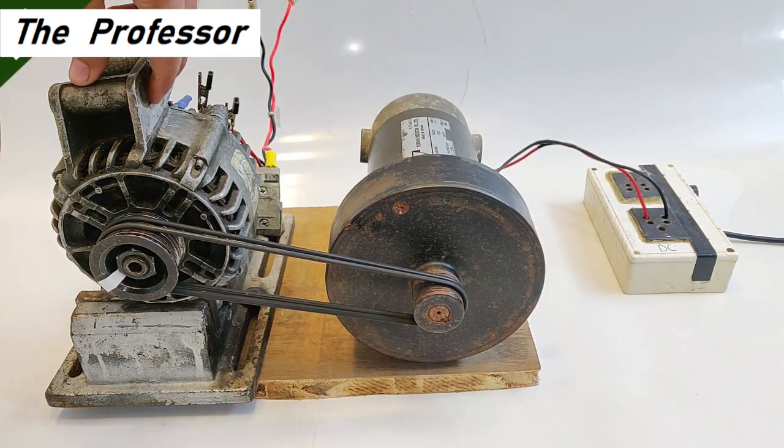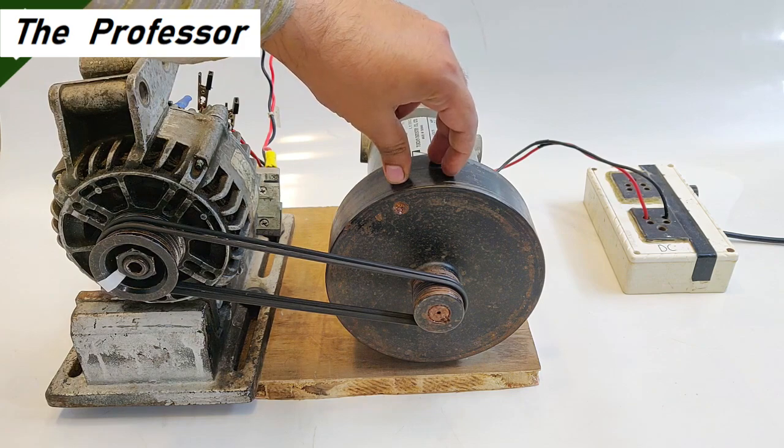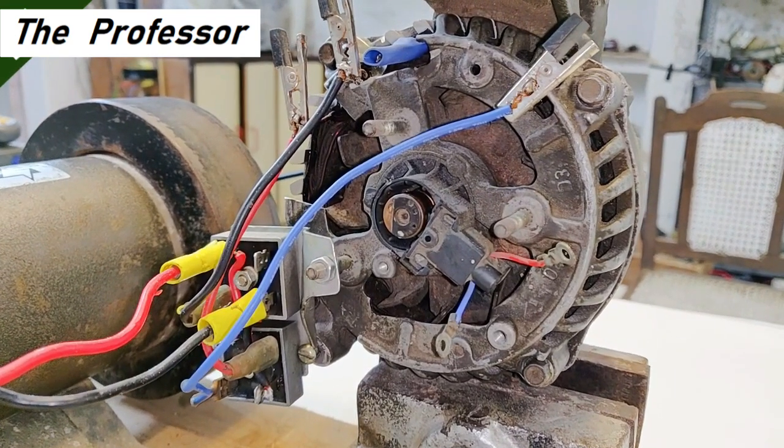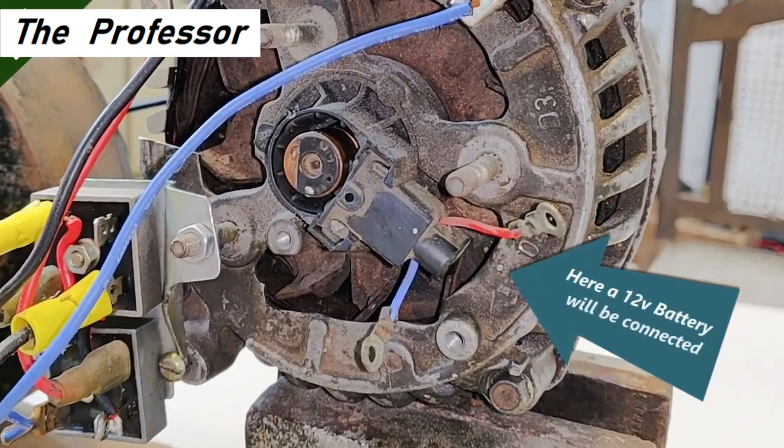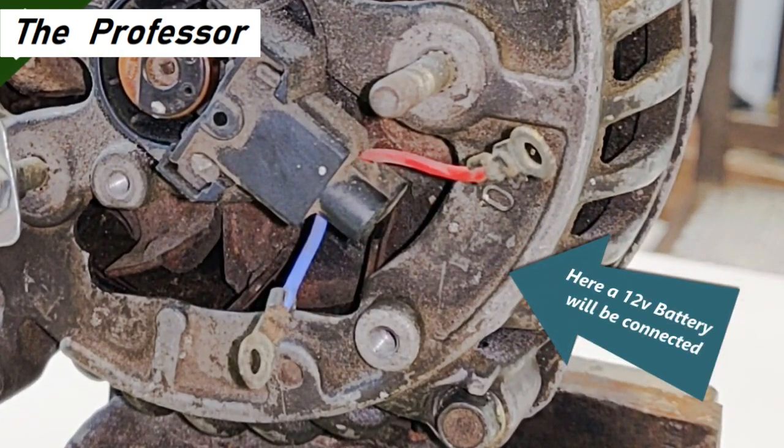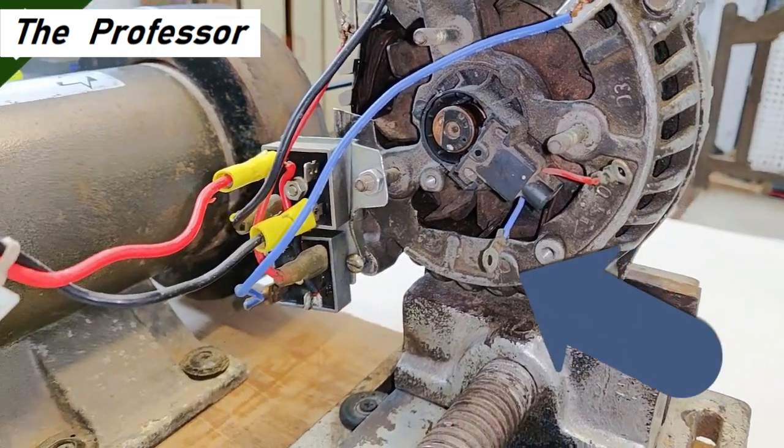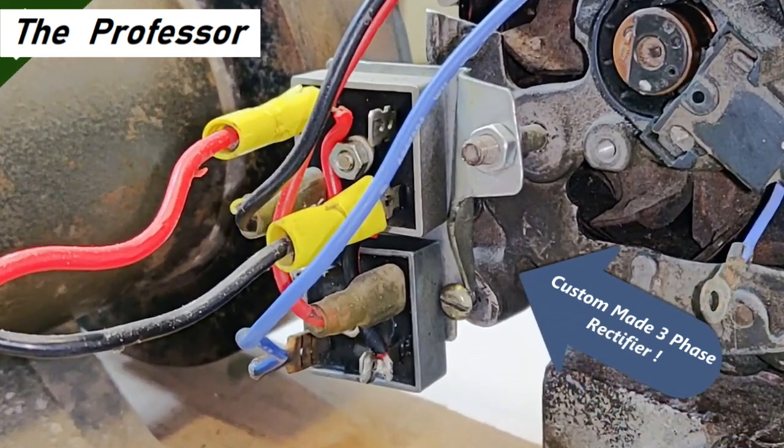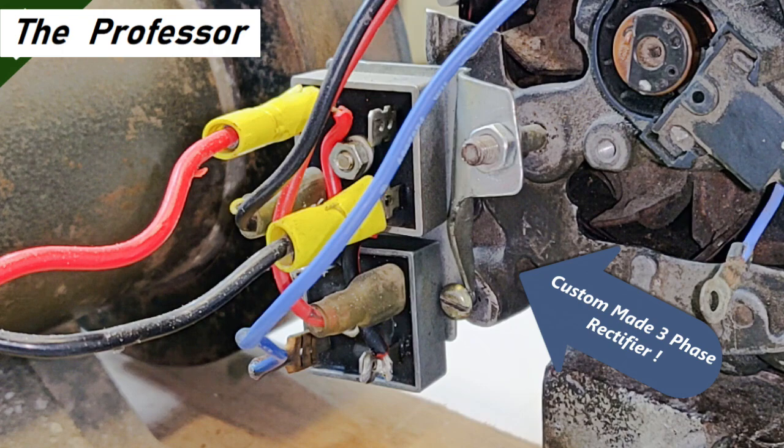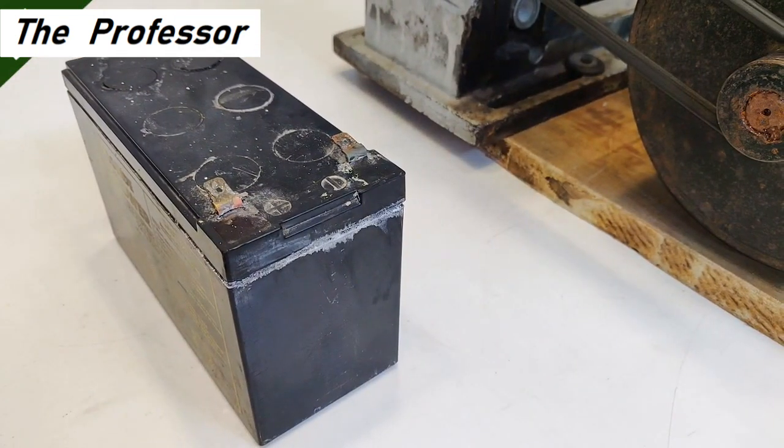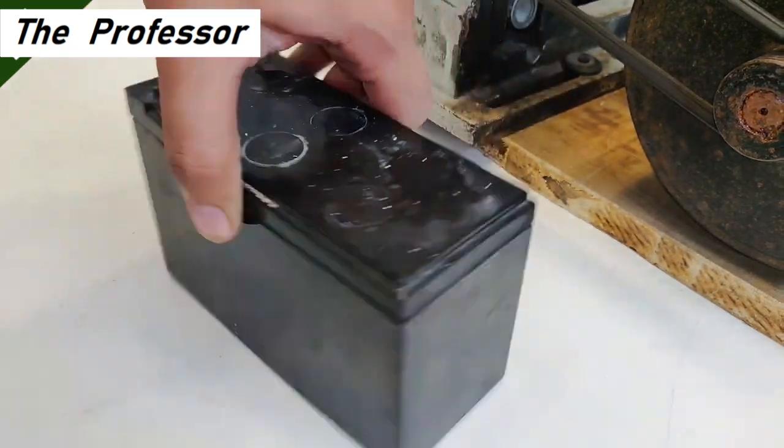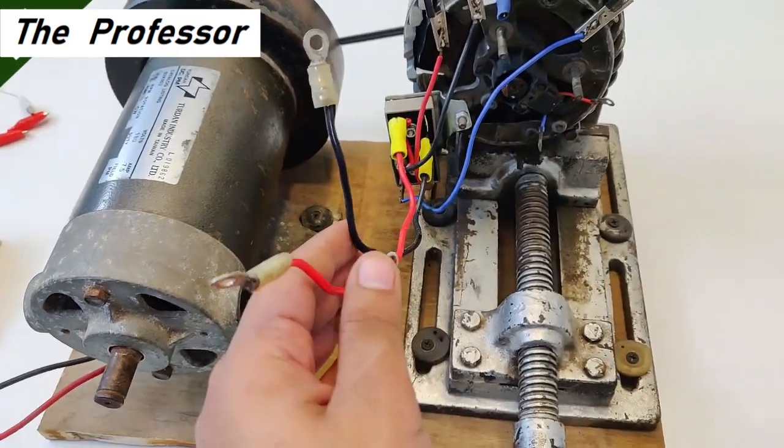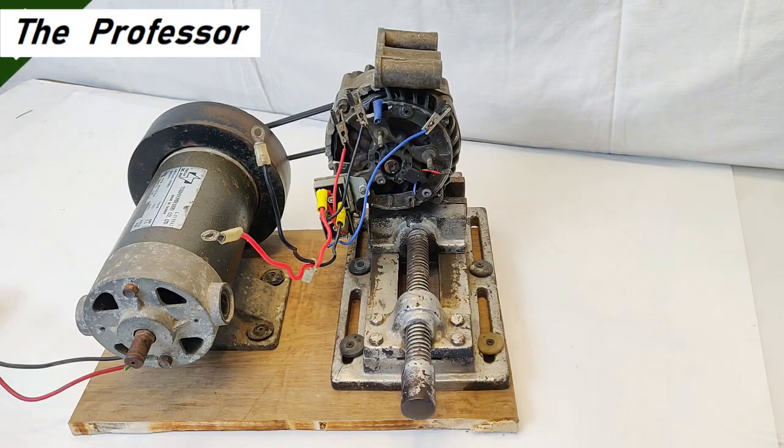This is a motor-alternator set. This motor is going to be driven by that speed controller box. This is the back side of the car alternator. The small thin red and blue wires are for exciting the rotor winding by connecting a 12 volts battery. To the left is a custom-made three-phase rectifier since the original rectifier broke. Link for its construction video will be in the description. Full output of the car alternator will appear on these two terminals, red and black.